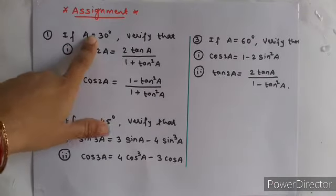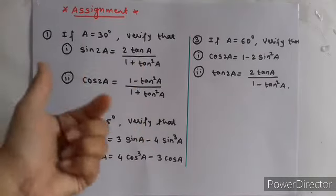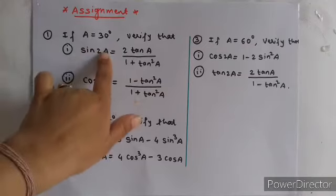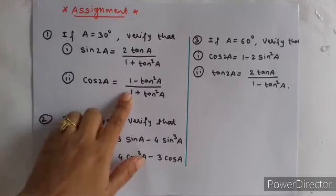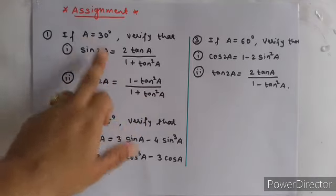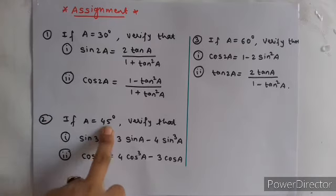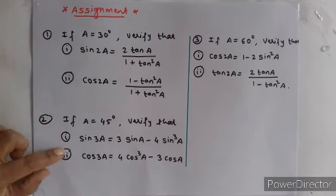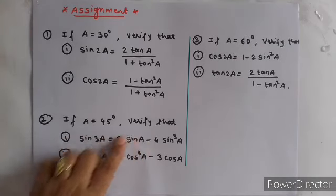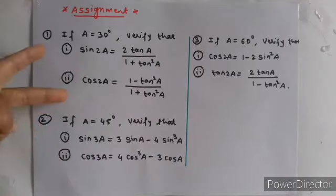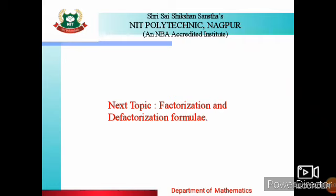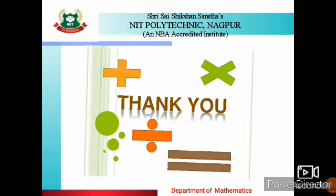Assignment: If a equals 45 degrees, verify the given results for sin 2A and cos 2A. Solve left hand side and right hand side and verify they are equal. There are three examples in total to solve. Our upcoming topic will be factorization and defactorization formulae. Keep learning, happy learning, thank you.